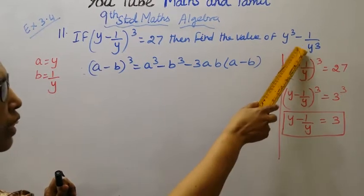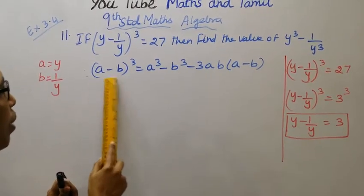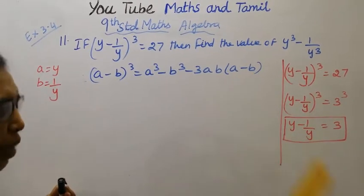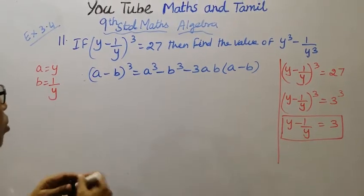This is the question here. So we will use the identity: a minus b the whole cube equals a cube minus b cube minus 3ab into a minus b.